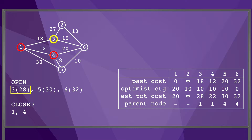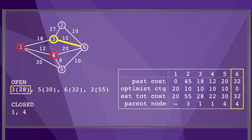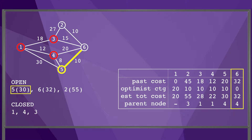Next, we explore from node 3. We take the edge to node 2, update node 2's information, and insert it into the sorted Open list. We then take the edge to node 6 and see that the cost through node 3 is 18 plus 15, or 33 — higher than the already known path cost to node 6 — so we ignore this edge. We move node 3 to Closed and mark node 5 for exploration. The only connected node not in Closed is node 6. The past cost to node 6 via node 5 is node 5's past cost of 20 plus the edge cost of 10, giving a new past cost of 30, which is less than 32. We update node 6's past cost and estimated total cost to 30, with parent node 5, and update node 6's entry in Open. We move node 5 to Closed.